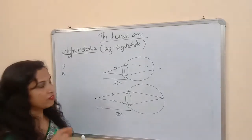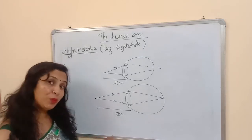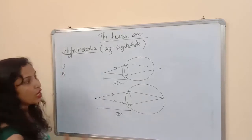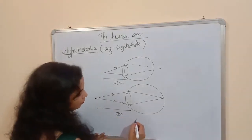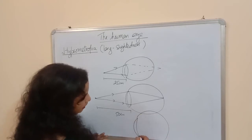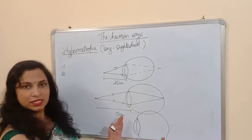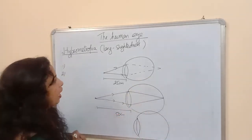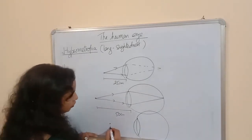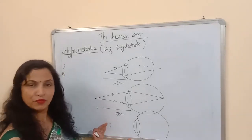How can this defect be corrected? By using a lens. In myopia we use a concave lens, but in hypermetropia we use a convex lens. We use a convex lens of proper power. Suppose this is the eye of a hypermetropic person and they want to read a book placed at 25 cm. Since they have hypermetropia, they cannot read the book at 25 cm.